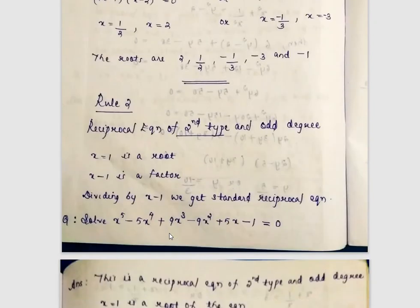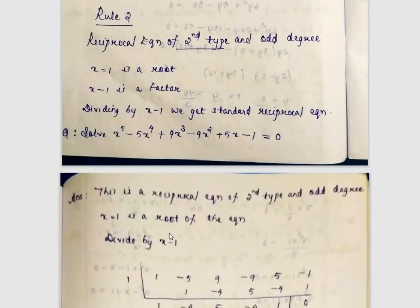The reciprocal equation of second kind with odd degree has x = 1 as a root. So (x - 1) is a factor. We divide the equation by (x - 1) to obtain a standard reciprocal equation of even degree.